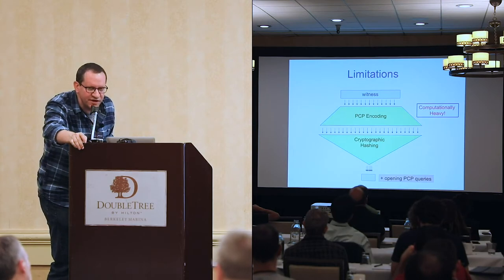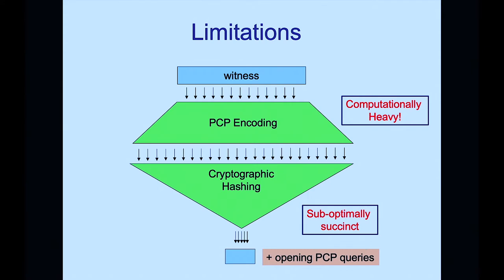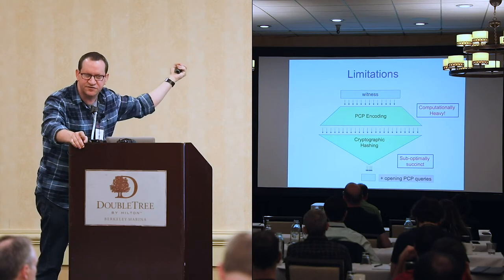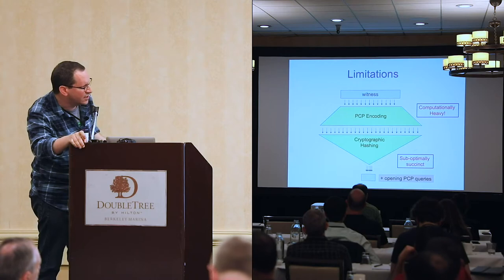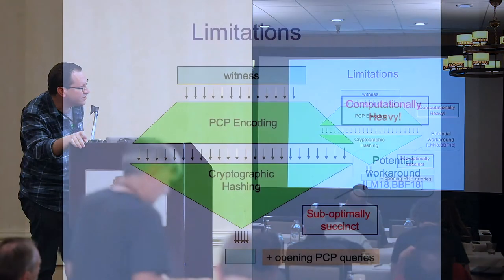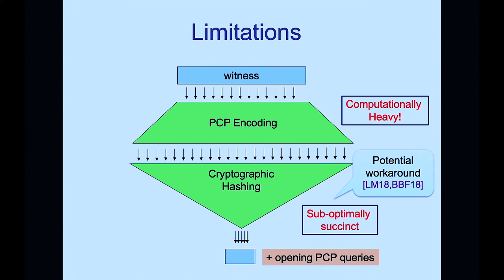The PCP encoding is computationally heavy and this approach is sub-optimally succinct. Two sources of overhead: first, soundness amplification requires many queries for good soundness; second, the log-depth Merkle tree path. Recent proposals by Leon, Maller, Volta, and Bonnet use a stronger crypto gadget than a Merkle tree — committing to a vector with selective opening of entries — which in principle allows getting close to the succinctness of pairing-based SNARKs, though at greater computational cost on the prover side.